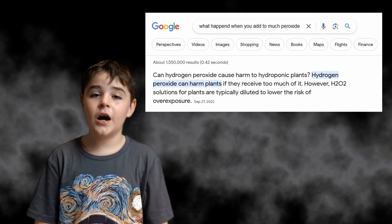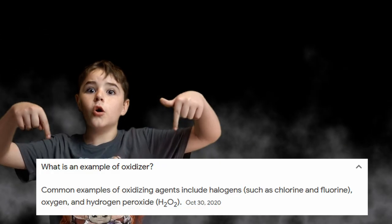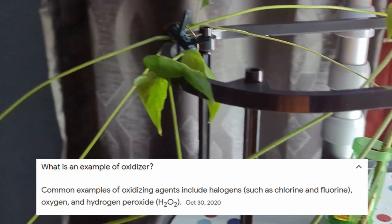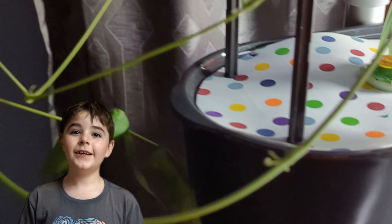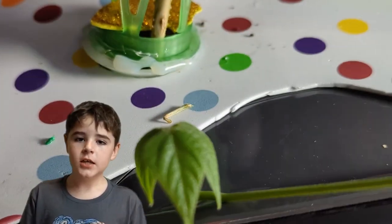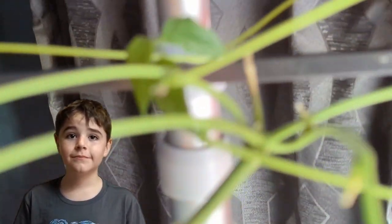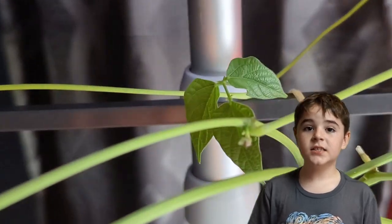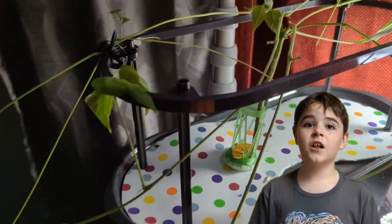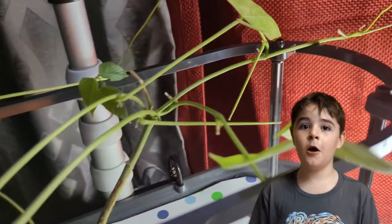Here's the vocab: peroxide damaged the plant. We added way too much. Here's a few pictures. As you can see, all the leaves fell off and it was surely going to be compost after this.